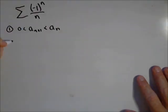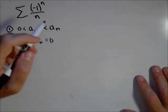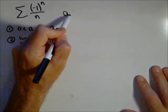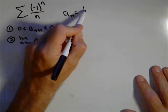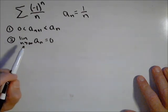We need it to be decreasing, and two, we need the limit as n goes to infinity of a sub n to equal zero. For our series there, a sub n is one over n. So we need to show that it's both decreasing and that its limit goes to zero.